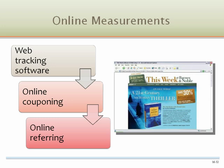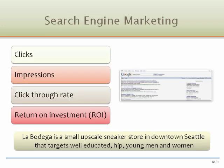Web tracking software indicates how much time viewers spend on particular web pages and the number of pages they view. Online couponing is a promotional web technique in which consumers print a coupon directly from a site and then redeem the coupon in a store. Using online referring, consumers fill out an interest or order form and are referred to an offline dealer or firm that offers the product or service of interest. There are many metrics used to evaluate the results of search engine marketing, including clicks, impressions, click-through rates, and return on investment.